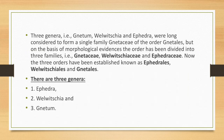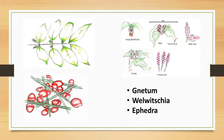The three genera were long considered to form a single family Gnetaceae of the order Gnetales, but on the basis of morphological evidence the order has been divided into three families, and three orders have been established, known as Ephedrales, Gnetales, and Welwitschiales. There are three genera: Ephedra, Gnetum, and Welwitschia, as shown in the diagrams.